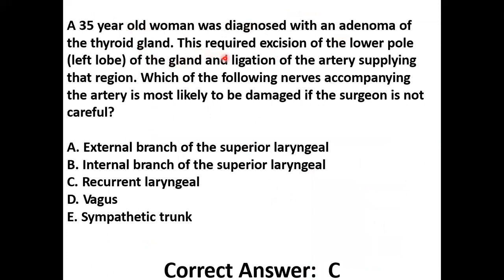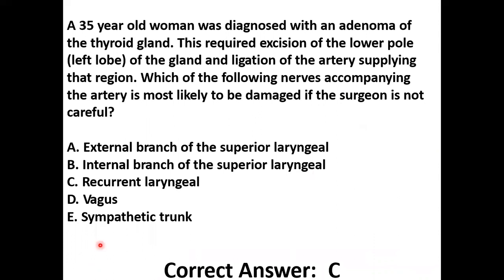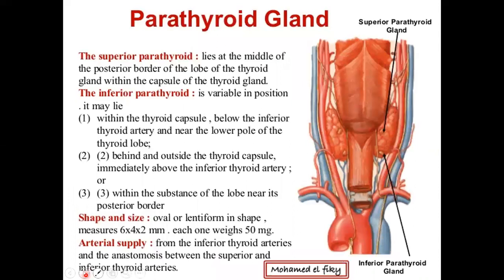Practice question: A 35-year-old is diagnosed with an adenoma of the thyroid gland requiring excision of the lower pole and ligation of the artery supplying that region. Which nerve accompanying that artery is most likely to be damaged? The recurrent laryngeal nerve is almost always the answer when it comes to this area. The recurrent laryngeal nerve and the inferior thyroid artery run right next to each other. When nerve damage in the neck after surgery is questioned, the answer is almost always recurrent laryngeal.